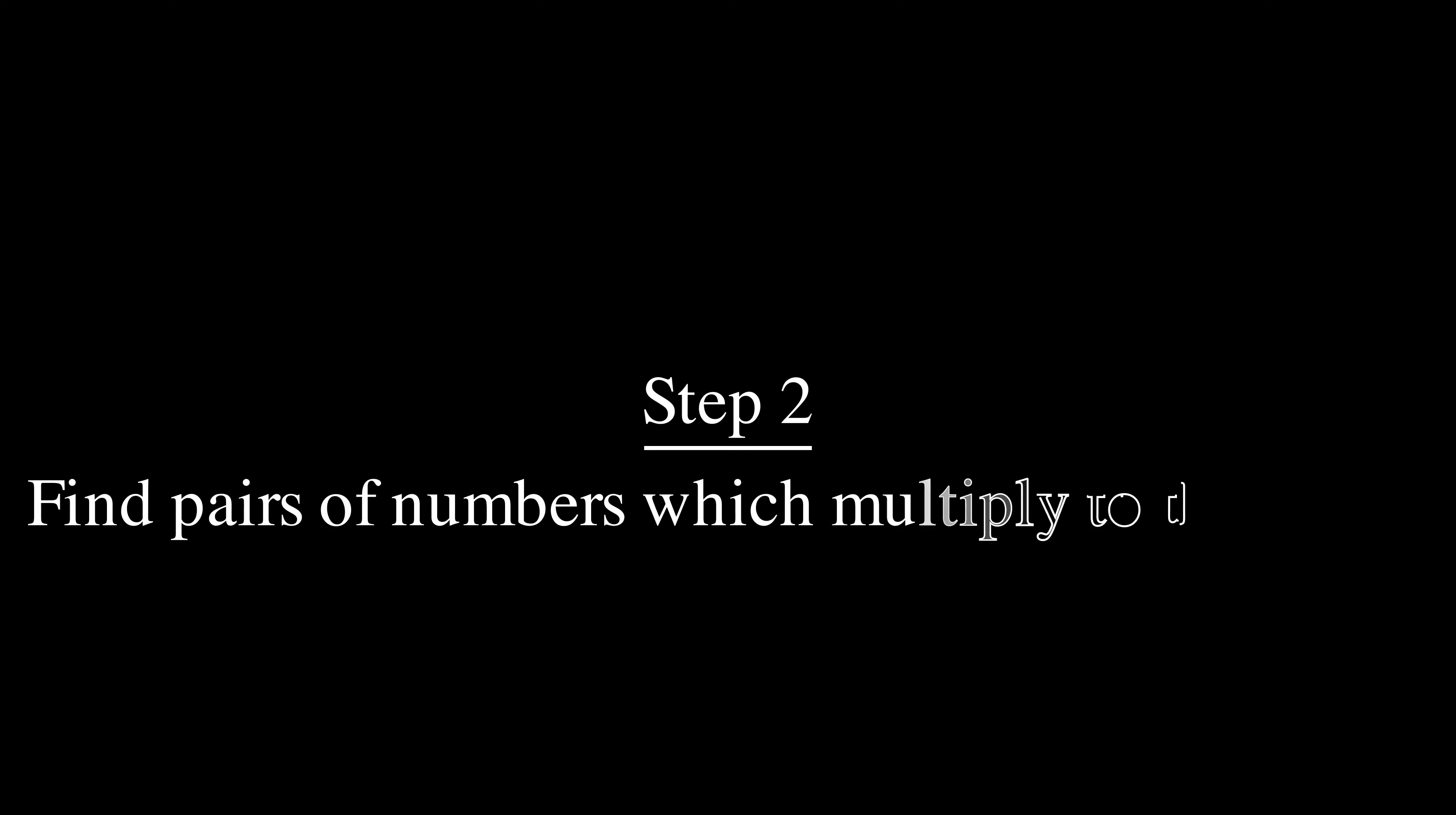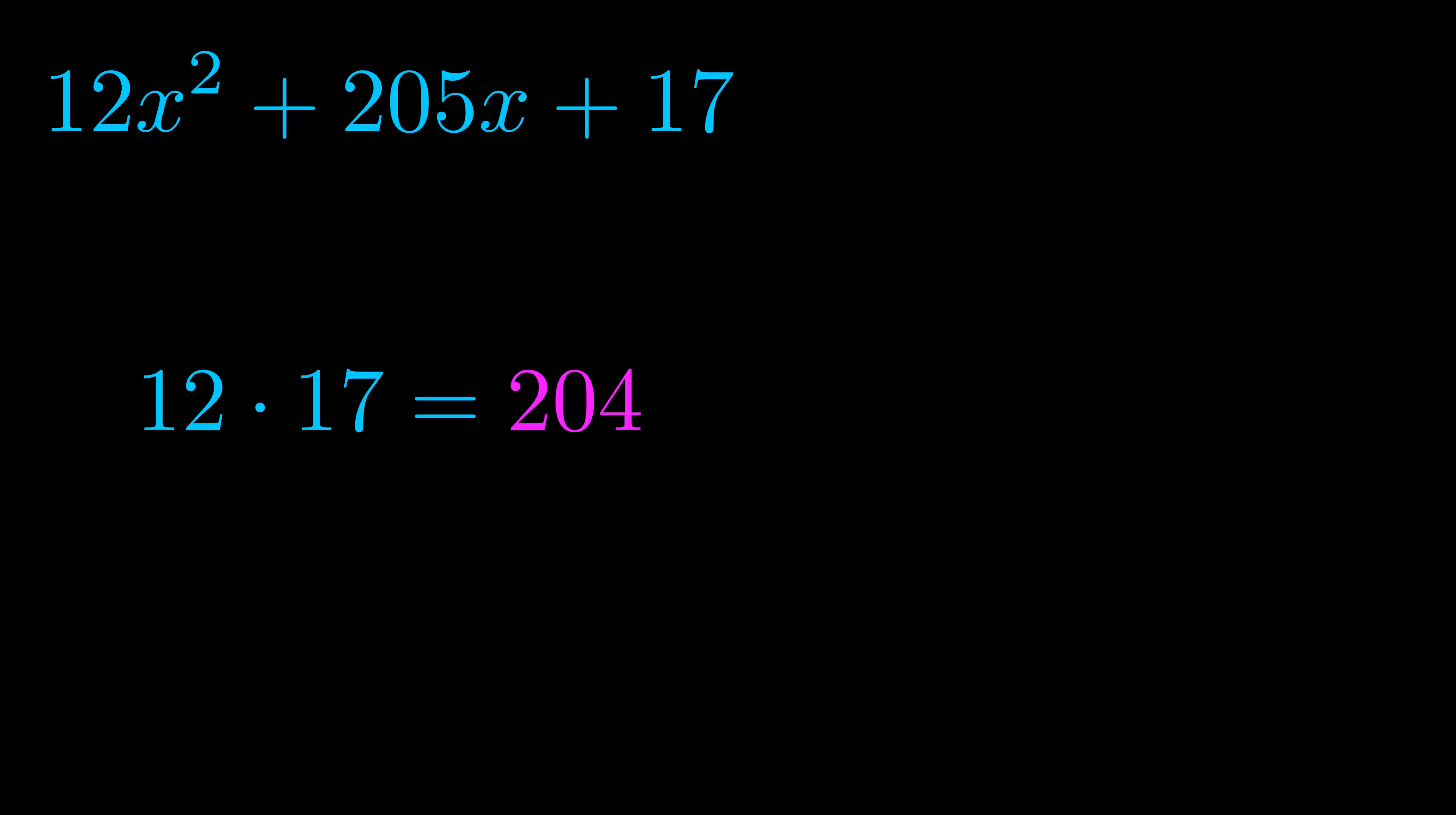Step two is to try to find all of the pairs which multiply to this number. Now it turns out you don't really need to find all of them but go ahead and write down as many numbers as you can that multiply to the magenta value for now. Pause the video and resume when you're ready to continue.